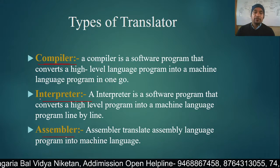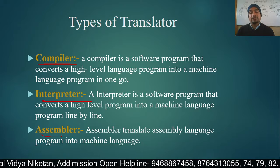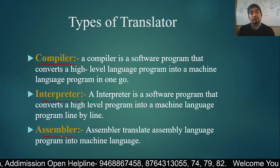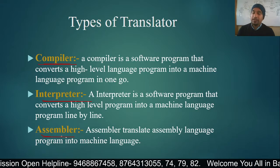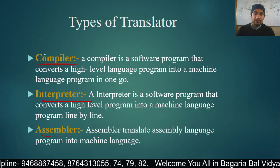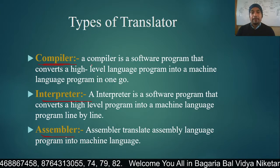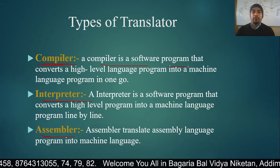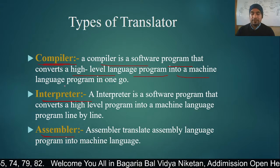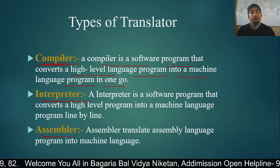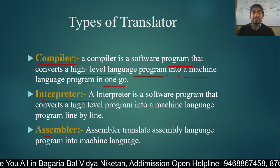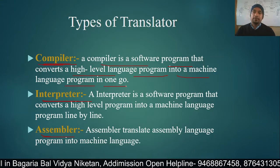What are compiler, interpreter, and assembler? All three are translators that convert high-level (source) programs into low-level (object) programs. A compiler is a software program that converts high-level programs into machine language programs in one go — meaning it translates the complete program from high-level to low-level all at once.